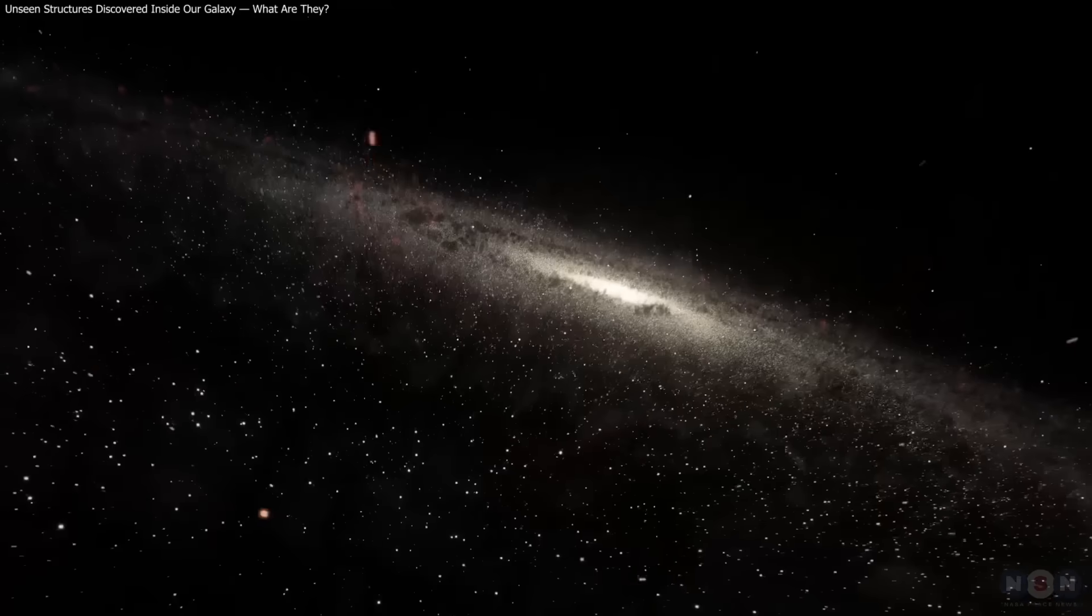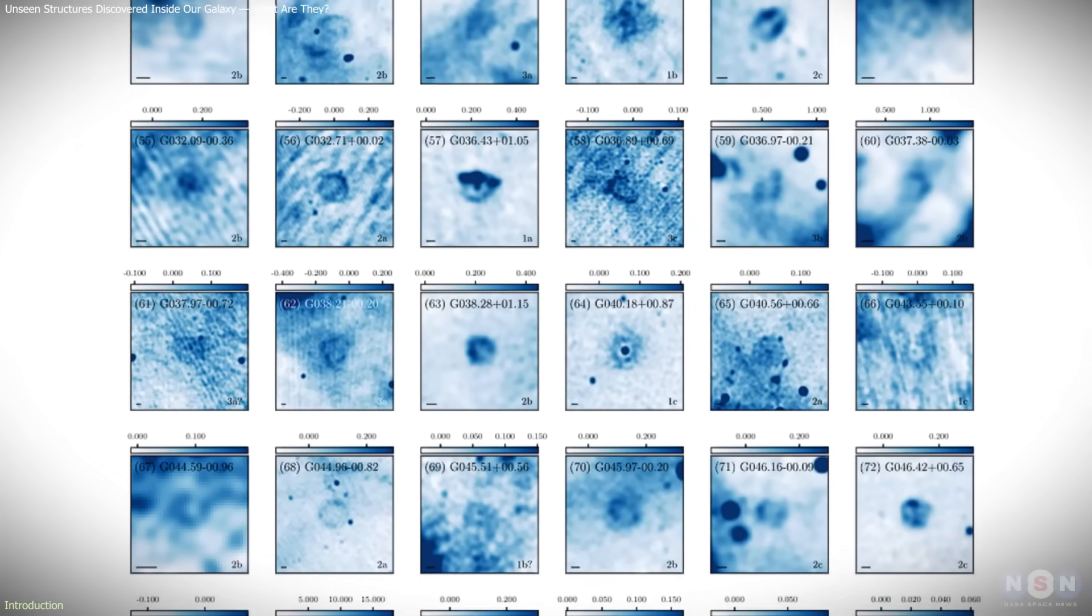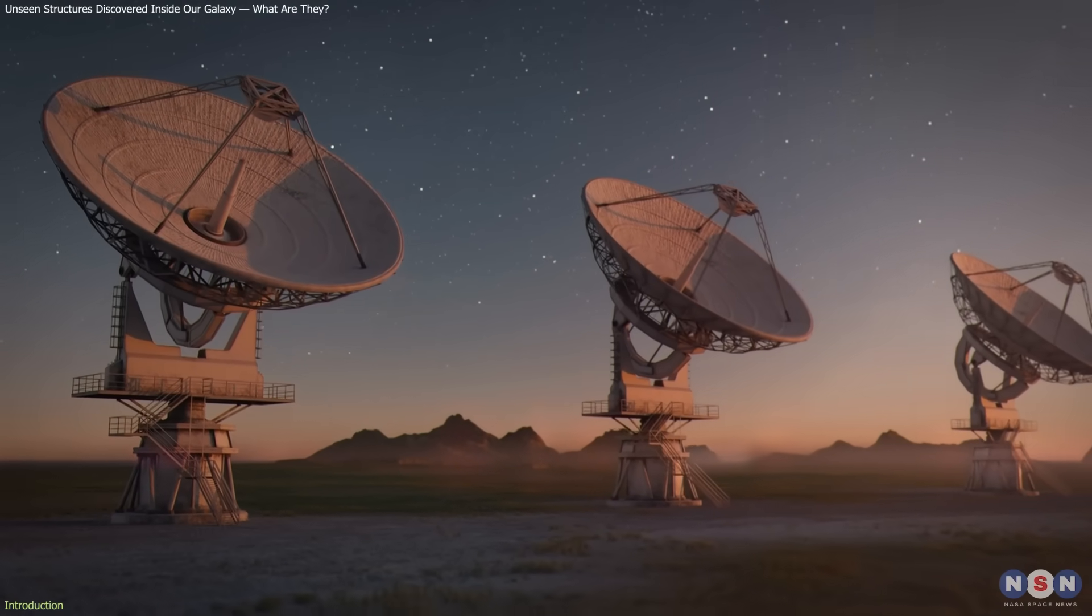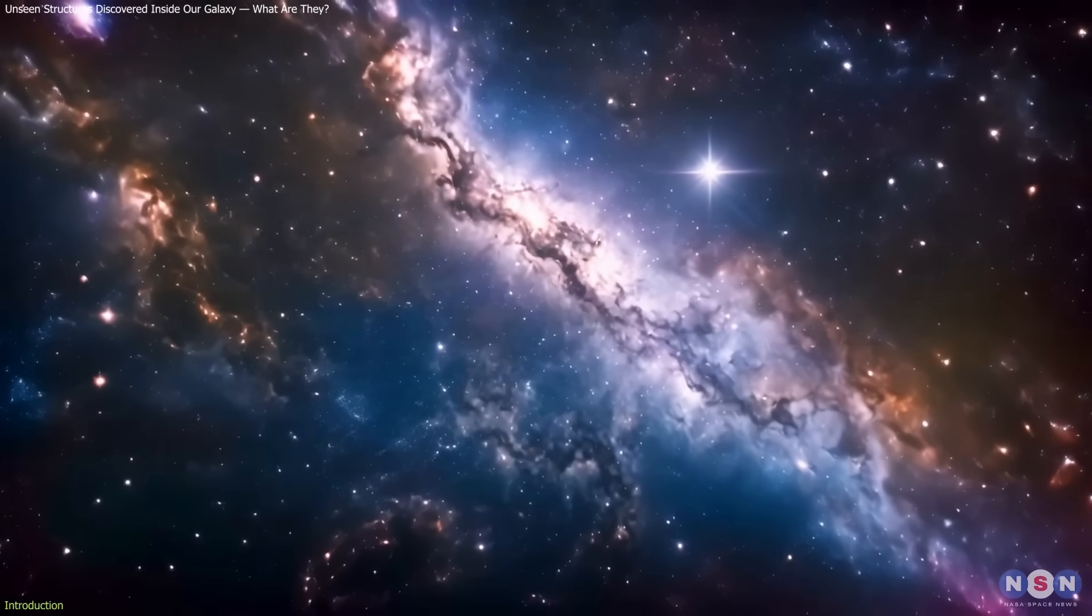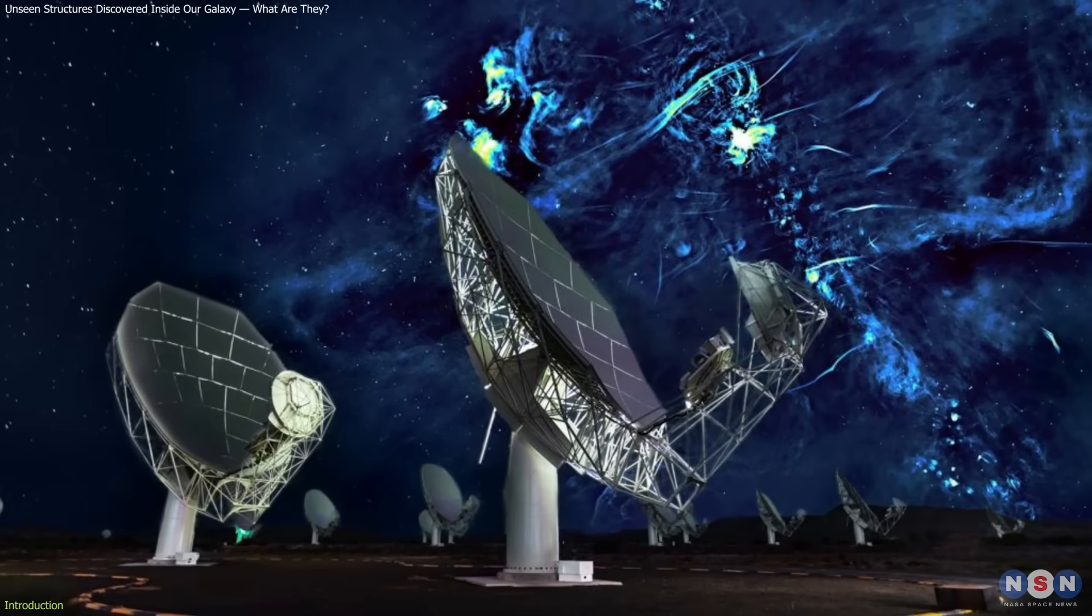The Milky Way just revealed something astronomers didn't expect. A hidden population of faint, ring-shaped structures that can only be seen through powerful radio telescopes. These aren't distant galaxies or background noise. They're real features inside our own galaxy, uncovered by Meerkat in South Africa.